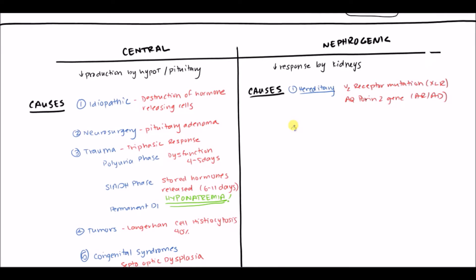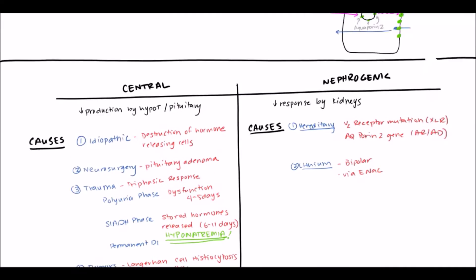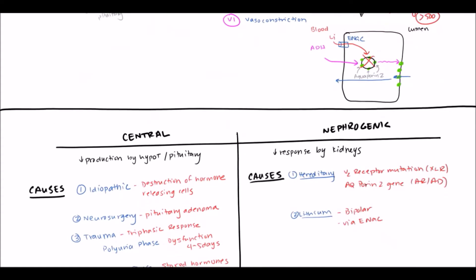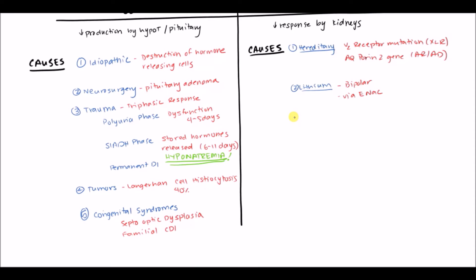Probably the most common cause is lithium use, which treats patients with bipolar disorder. The pathogenesis: the principal cells have a sodium channel called ENaC. Lithium uses that ENaC channel to enter the principal cell and then blocks the vesicle for aquaporin-2, thereby giving the patient nephrogenic diabetes insipidus by inhibiting the aquaporin-2 channel from reaching the membrane.